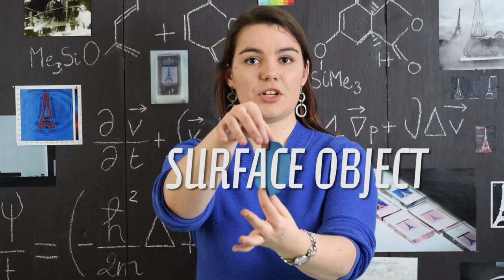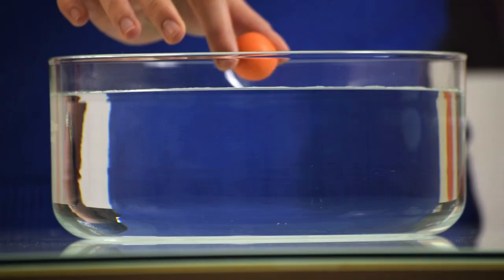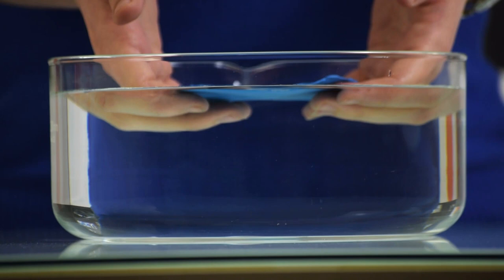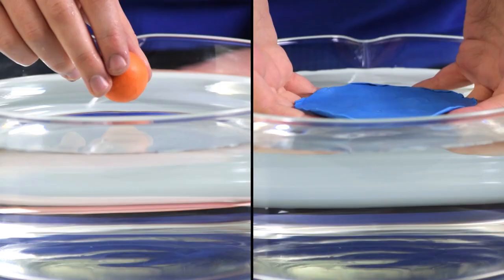Now let's see what happens when we put these two objects in water. The ball sinks, whereas the disc floats. The behavior depends not only on the mass, but also the shape of the object, on the relationship between the surface and the volume.